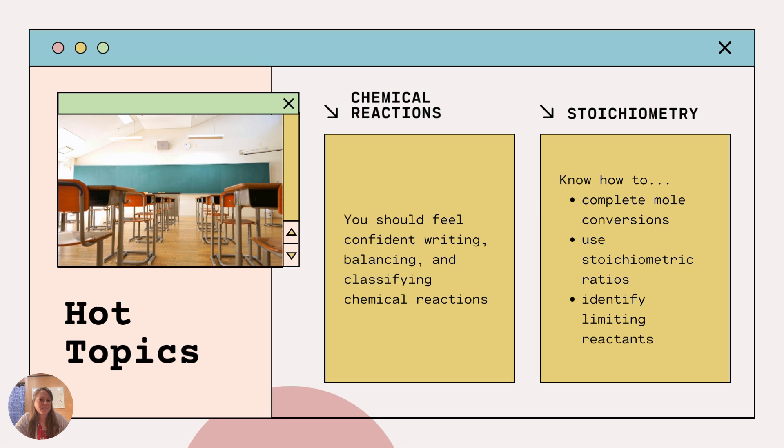All right, other topics to know. Chemical reactions. This should be like an easier one. Feel confident in writing, balancing, and classifying those chemical reactions. Predict the products, and then write the chemical formulas of the ionic compounds formed. Feel really good about that. And then that's going to connect into stoichiometry. Start with the mole conversions. Use just the mole ratios using those coefficients from the balanced equation, which you can then use to predict theoretical yields or identify limiting reactants.